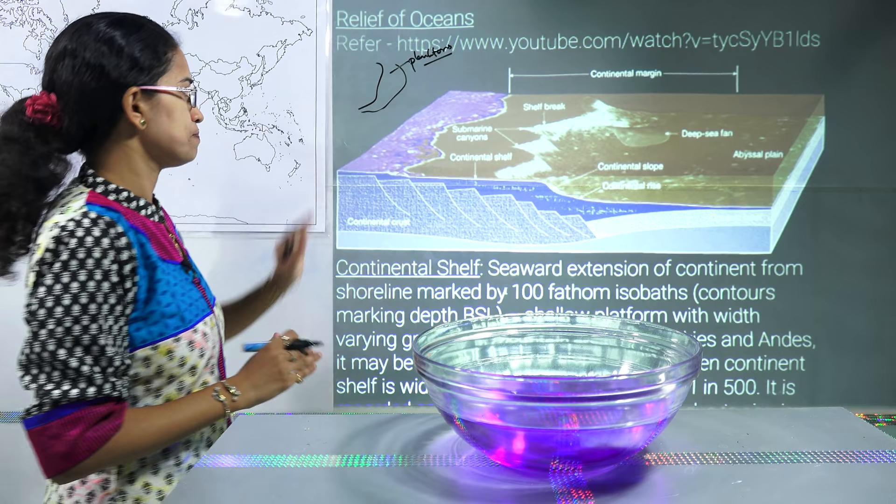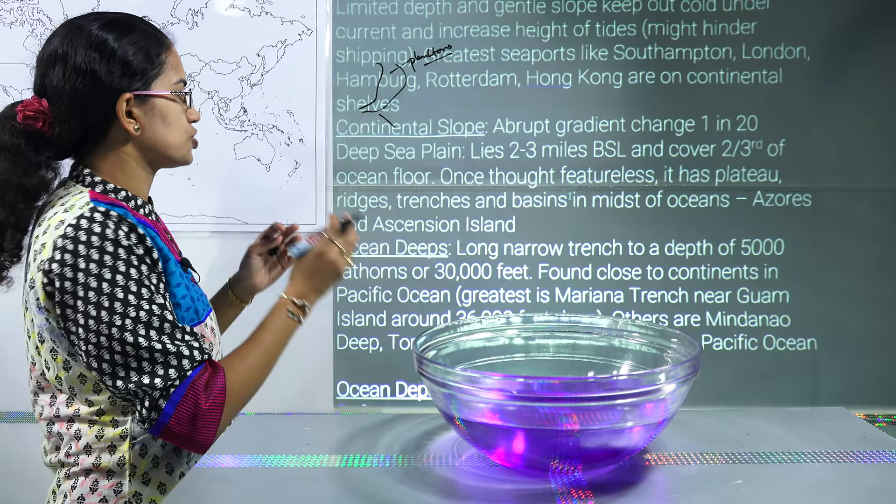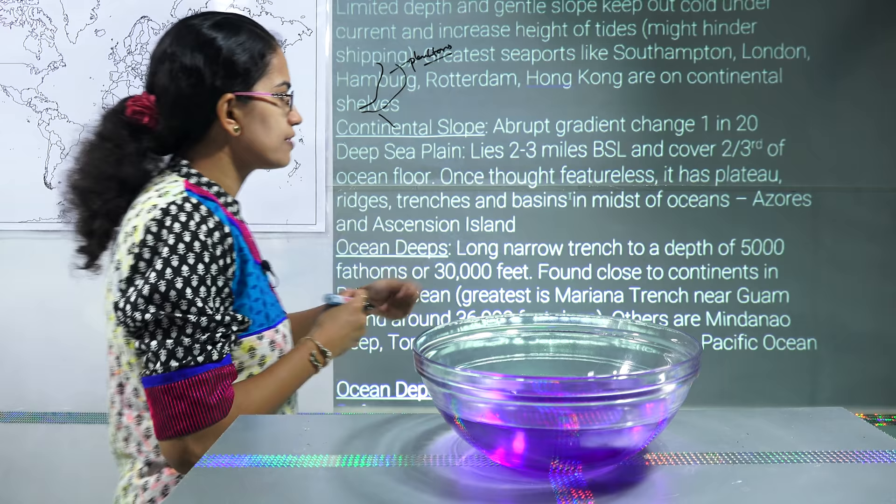Generally the continental slope is marked by a kind of 1 to 20 degrees ratio. Previously it was thought that this continental slope is a kind of featureless area, but with more studies you can now see trenches and basins that are part of the continental slope.